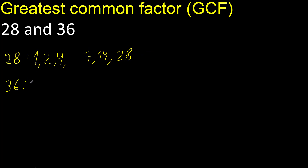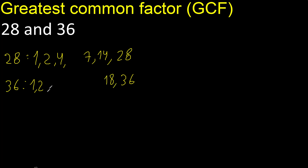Factors. Always start with 1. 36 divided by 1 is 36. Next. Divided by 2, 18. Next. Divided by 3, 12. Next. Divided by 4, 9.